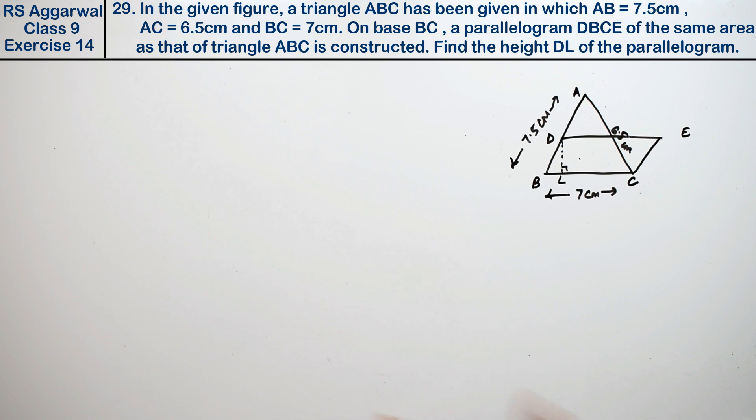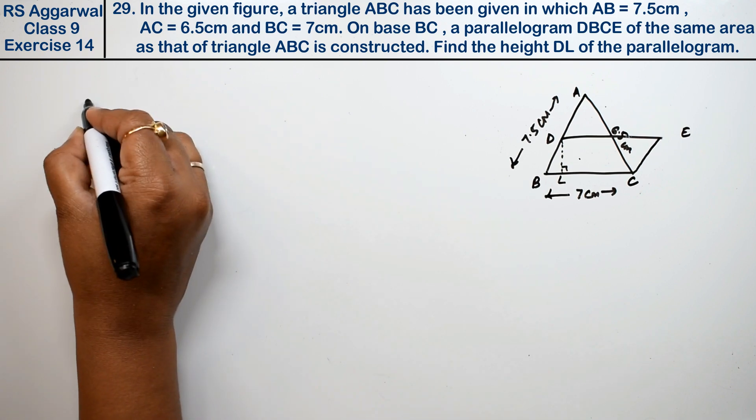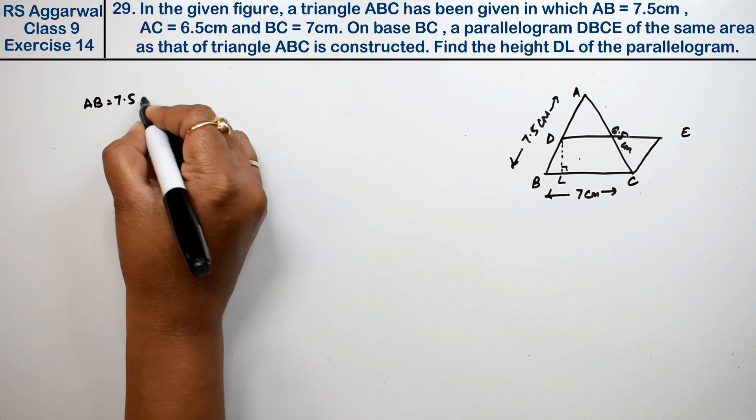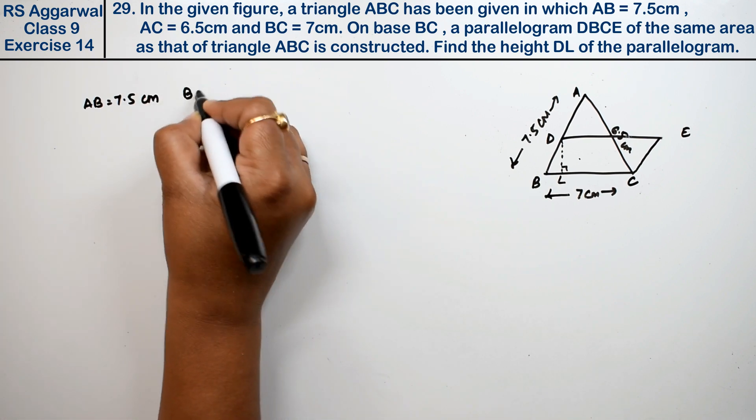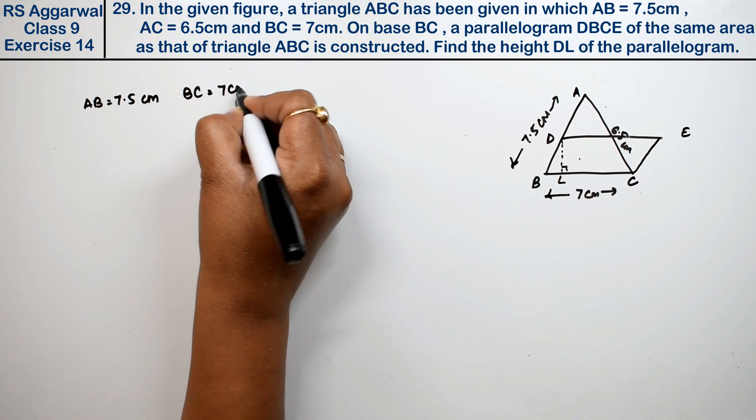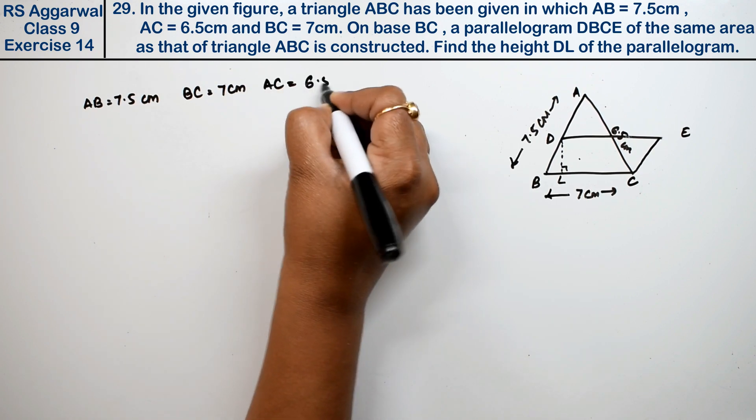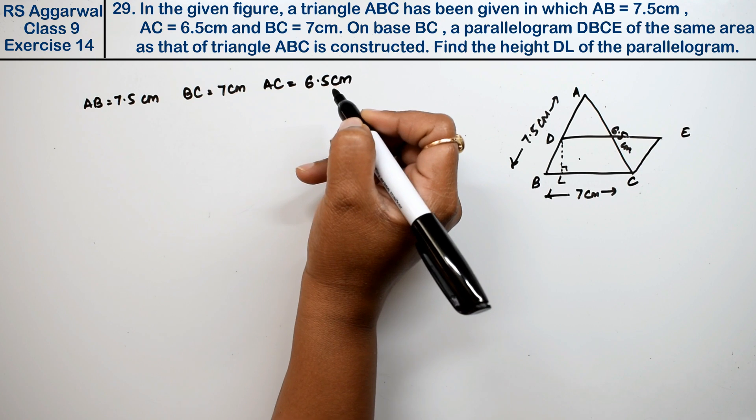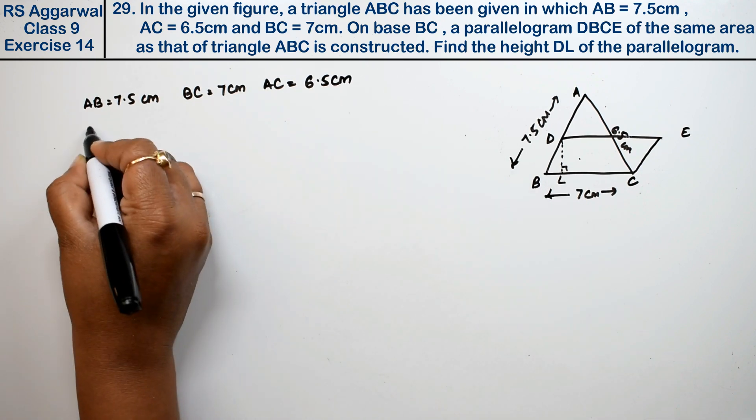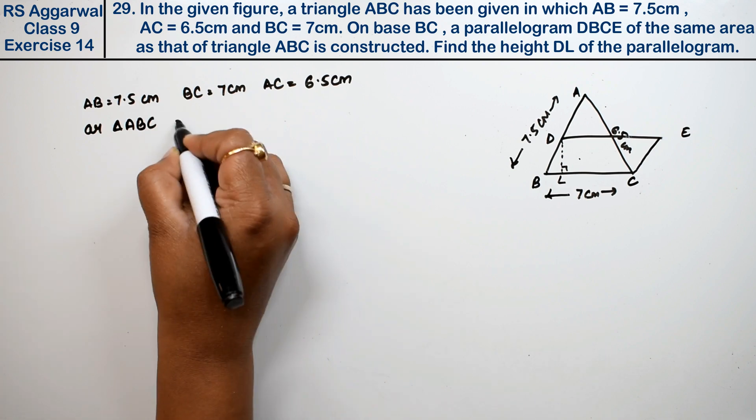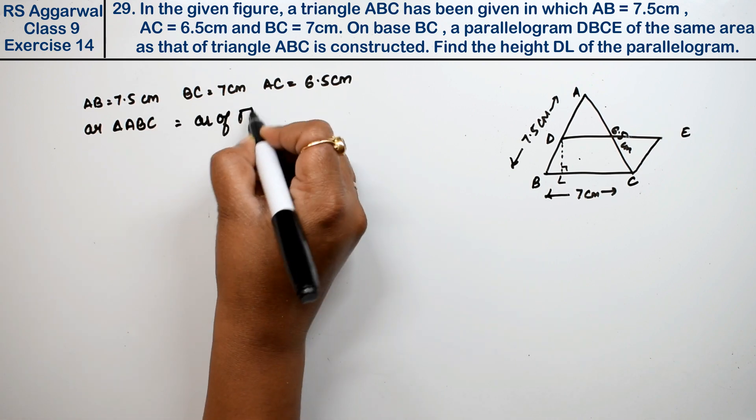First let's write what we are given: AB is 7.5 cm, BC is 7 cm, and AC is 6.5 cm. Now, area of triangle ABC is equal to area of parallelogram DBCE.